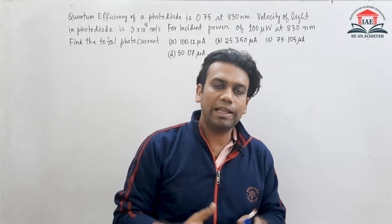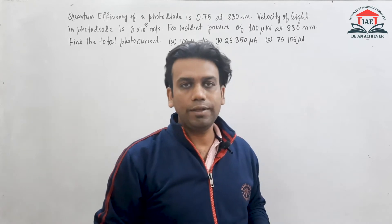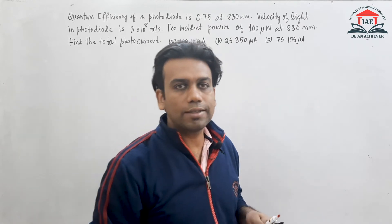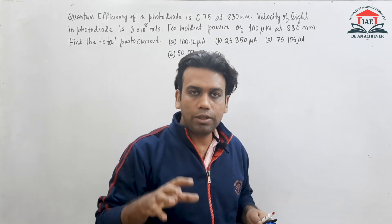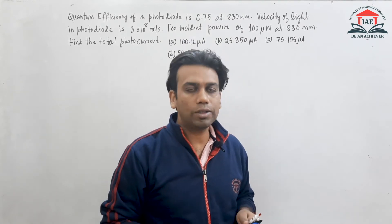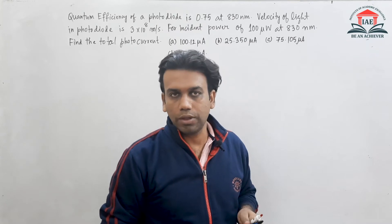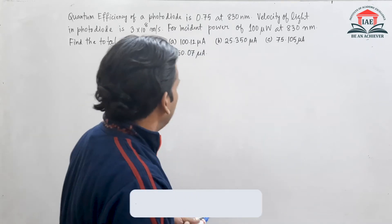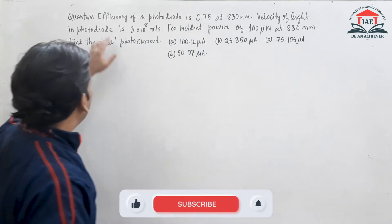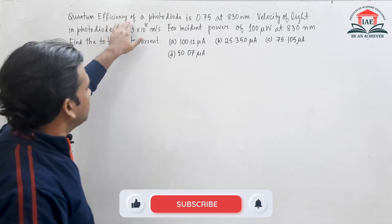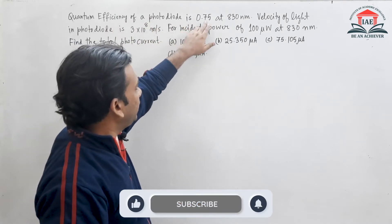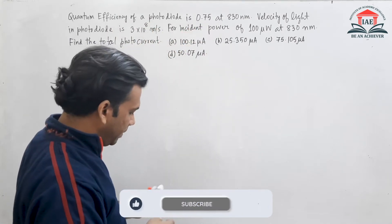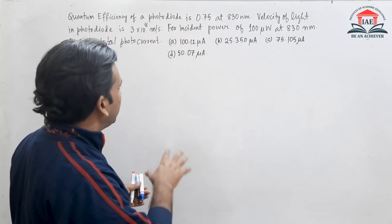Hello students, welcome to IE. In this video we are going to discuss a numerical on the photodiode. The quantum efficiency of a photodiode is given as 0.75.